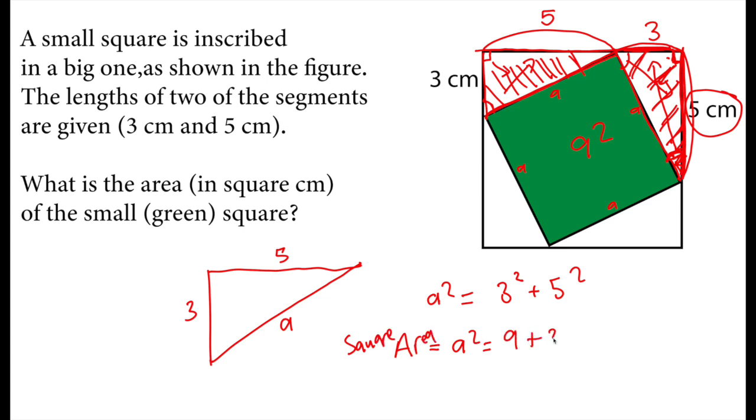And that equals 9 plus 25. Therefore, the area a² is 34 square centimeters. So this is our solution.